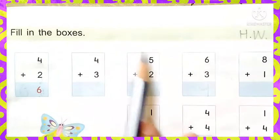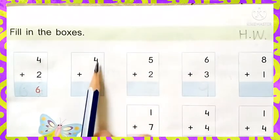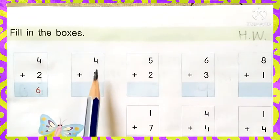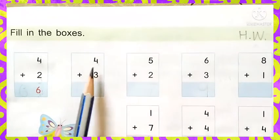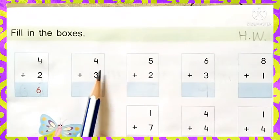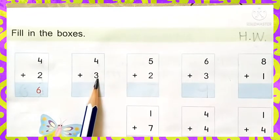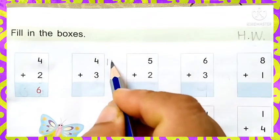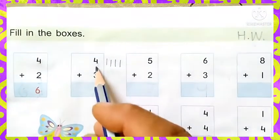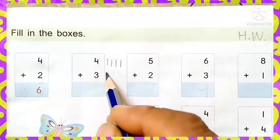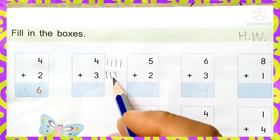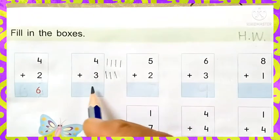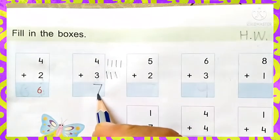Fill in the boxes. In this page there are many sums, and the sums are in vertical way. Vertical way means standing line order, or we can say add down. Here number four — we will add four and three. Four plus three. First of all, we have to draw four lines: one, two, three, four. And here number three, so we draw three lines: one, two, three. Altogether: one, two, three, four, five, six, seven. So we write our answer seven in this box.